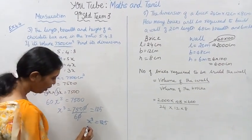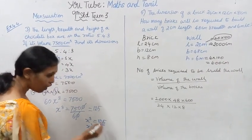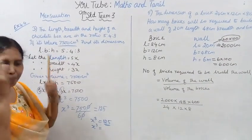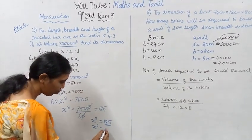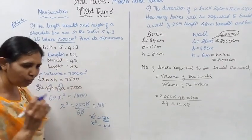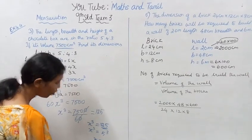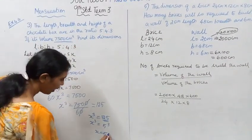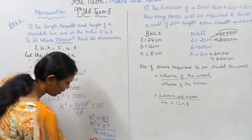x cubed equals 125. We need to find x. Since 5 cubed equals 5 times 5 is 25, and 25 times 5 is 125, therefore x equals 5. The unit is centimeters, so x equals 5 centimeters.